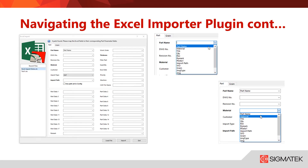Now that you've highlighted the Excel file, you can start mapping the information that you're pulling from the Excel file to the appropriate part data fields by clicking the corresponding drop-downs. You may notice abbreviations in the drop-downs for these fields, such as THK for thickness. That is perfectly acceptable — just make sure to map it to the appropriate item data fields.